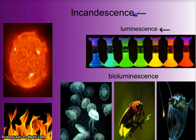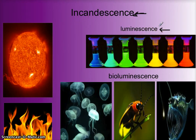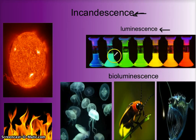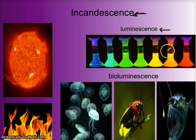Luminescence is the production of light without the high temperatures needed for incandescence. So the key difference is temperature. Most of the light we see comes from things that are very hot, like the Sun, but some things produce their own light without such high temperature — like a neon-glow paint, which isn't terribly hot.